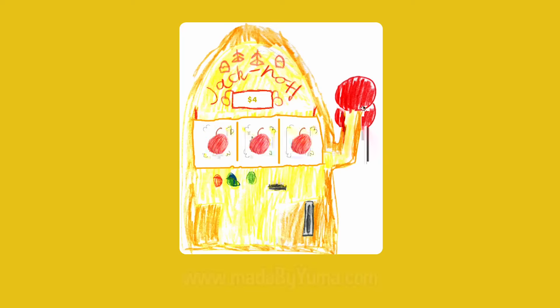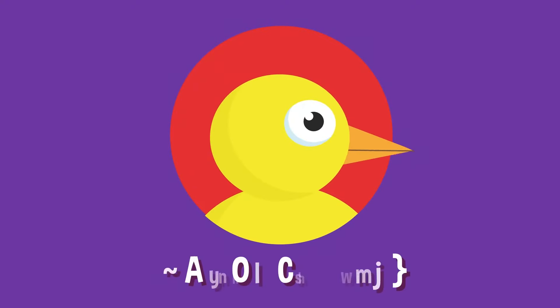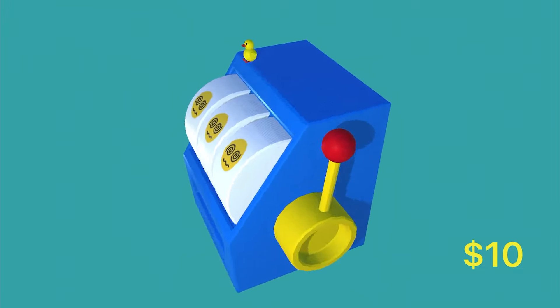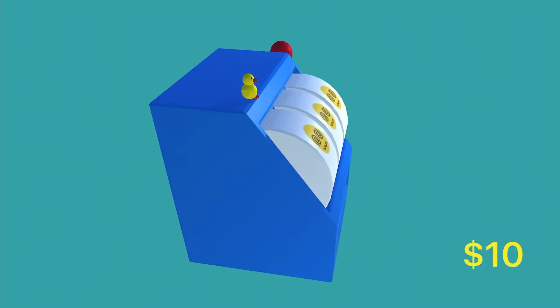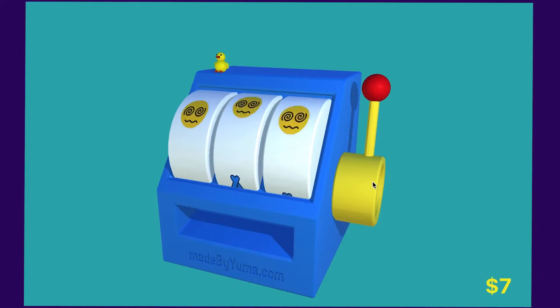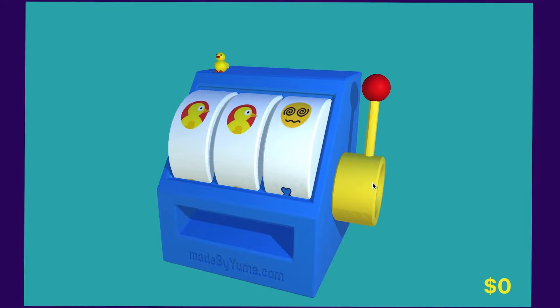One of my first games was a jackpot game I made when I was seven — it's a simple JavaScript game you can play on my website. I thought it'd be fun to improve this by making a 3D game and show you how to do it in Swift Playgrounds. So this is what we're going to be making today. It's quite a simple game. You start off with some money — in this case it's $10 — you pull the lever, and the reels will spin.